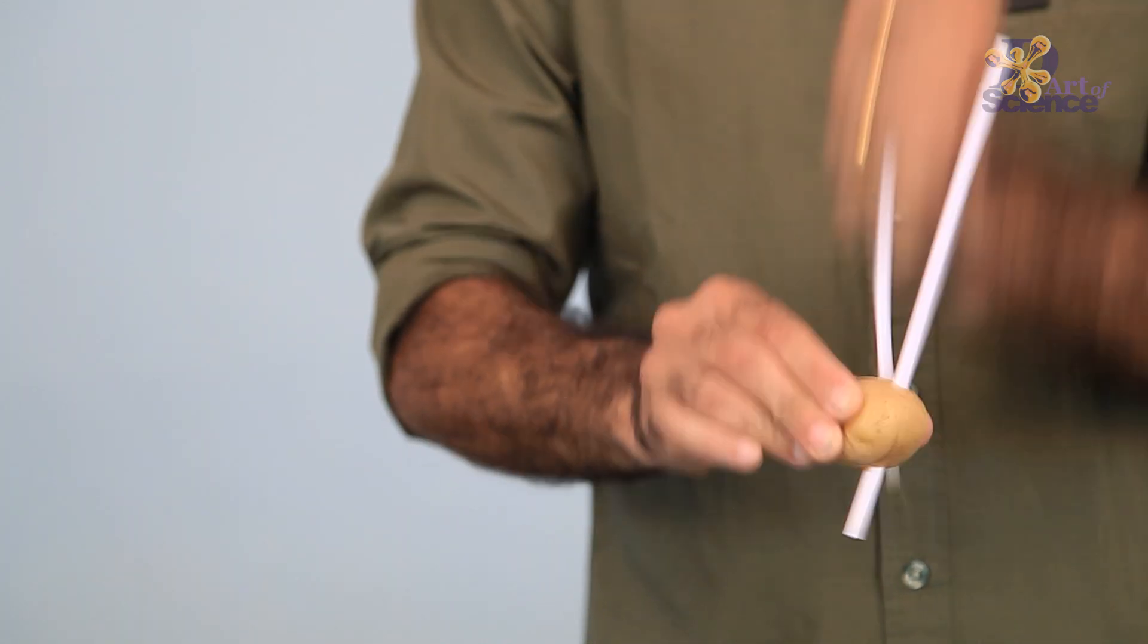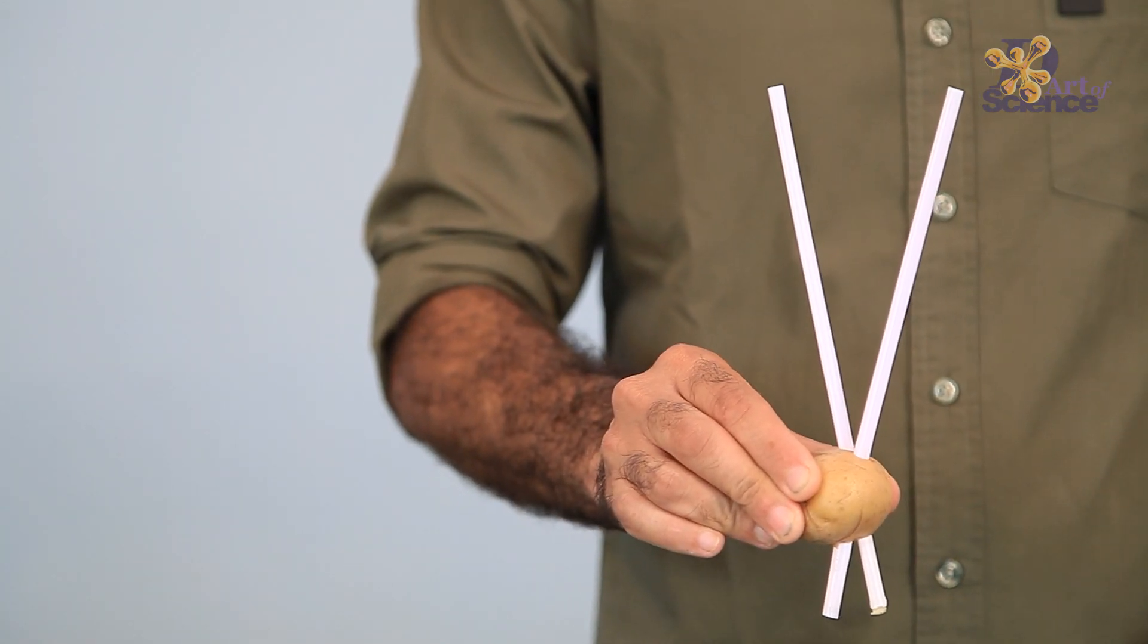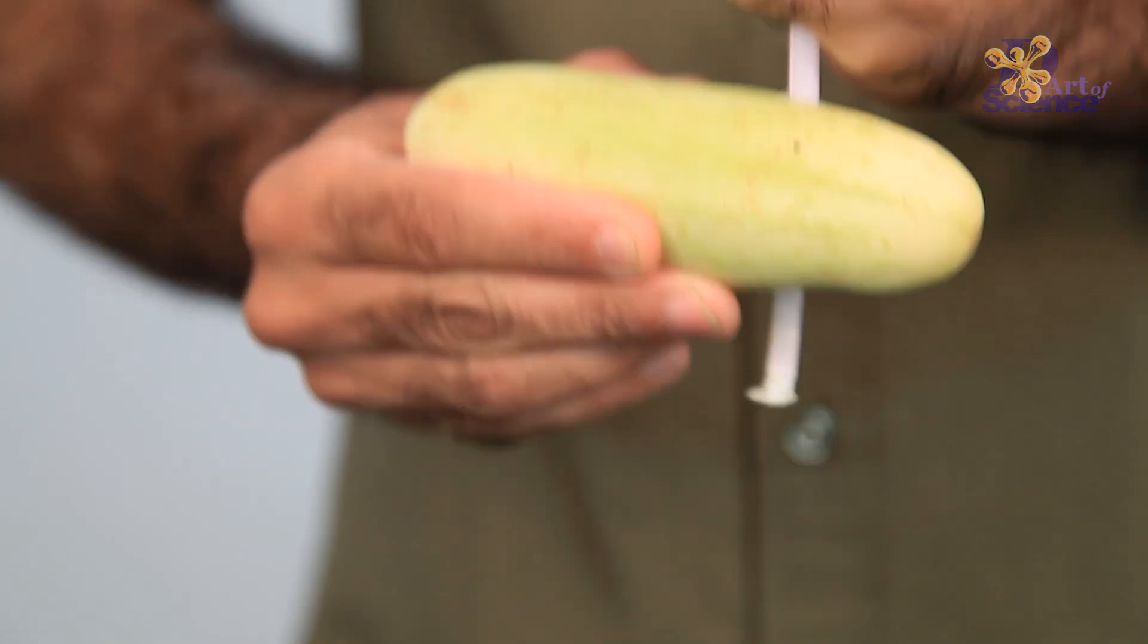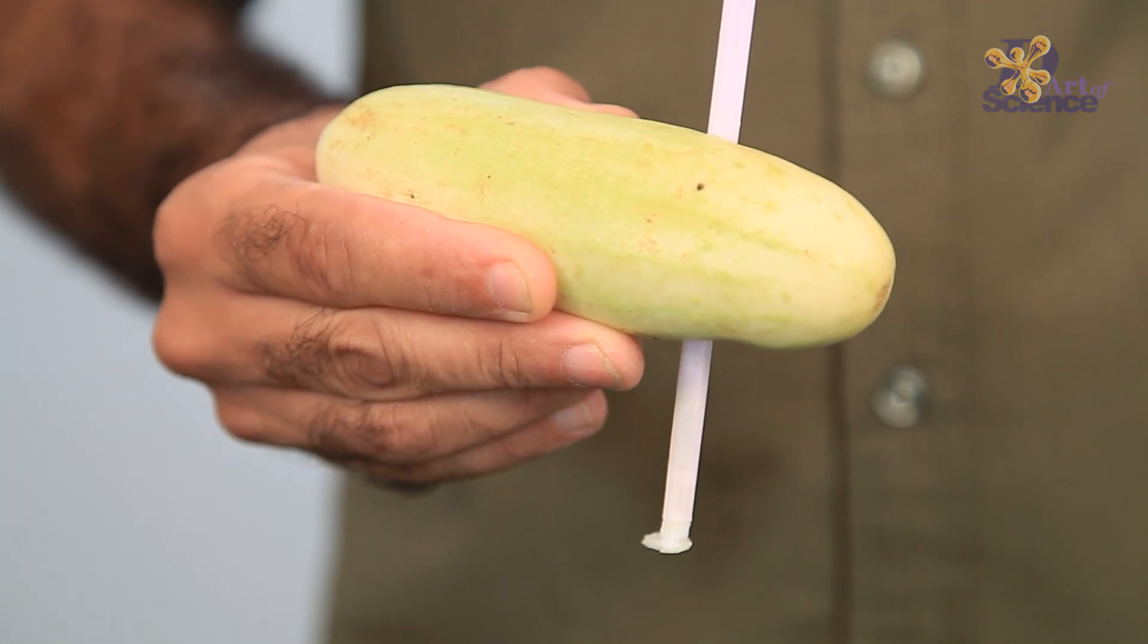And that, my friends, is how you make a potato look like a pin cushion. I hope you enjoyed this little physics demonstration. Thank you for watching The Art of Science and we'll see you next week!